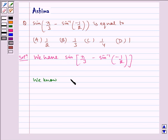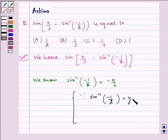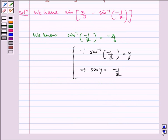And we know sin inverse of minus half is equal to minus pi by 6, because sin inverse of minus half is equal to y, which implies sin y is equal to minus half, which implies minus sin pi by 6 is equal to sin of minus pi by 6.